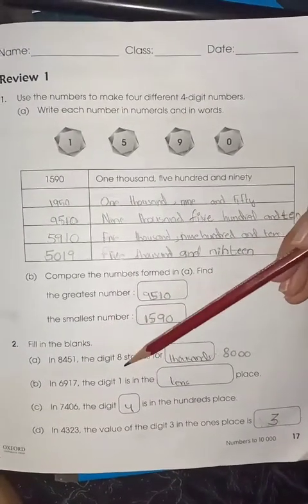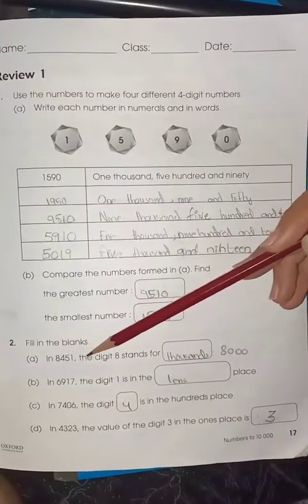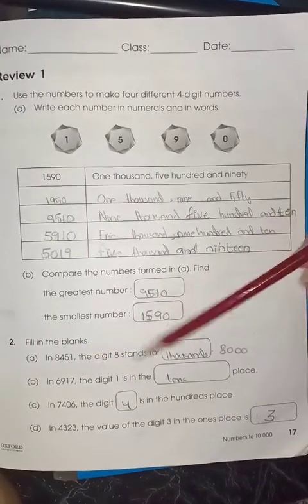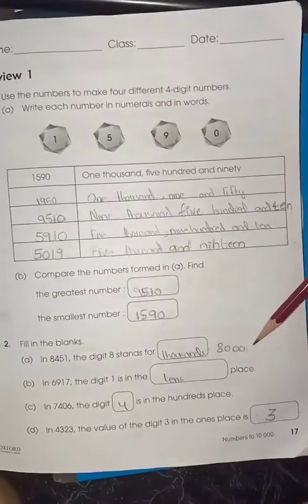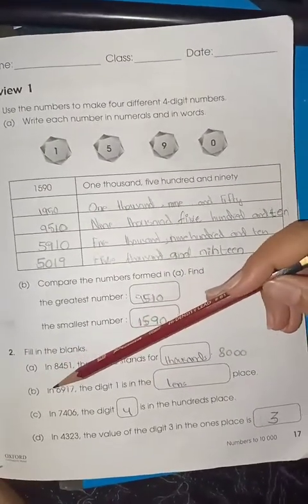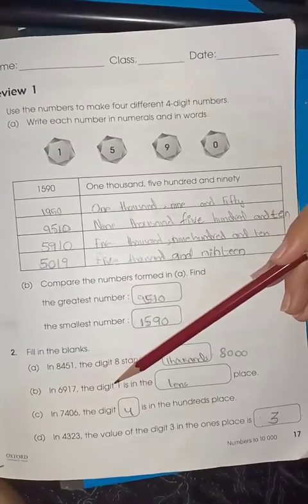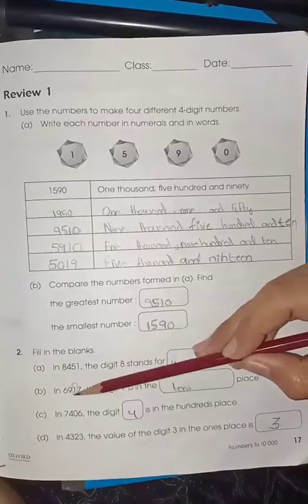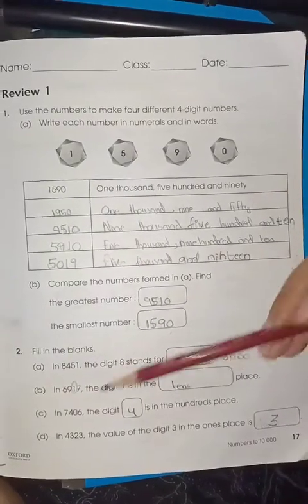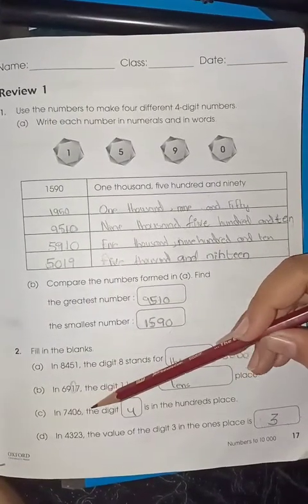Fill in the blanks. Here are some blanks. The digit 8 stands for 1, 10, 100, 1000. So you can write 1000 or you can write 8000. In 6917, the digit 1 is in the tens place.